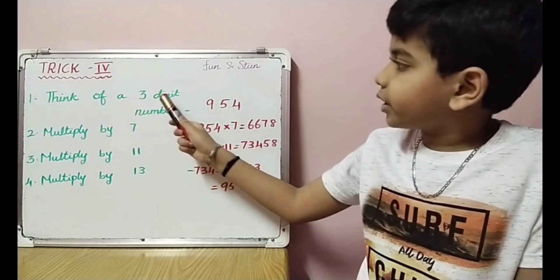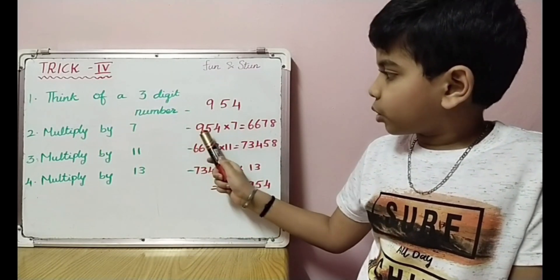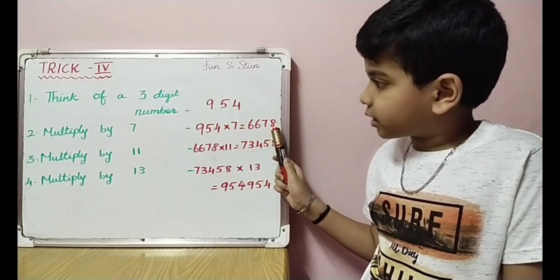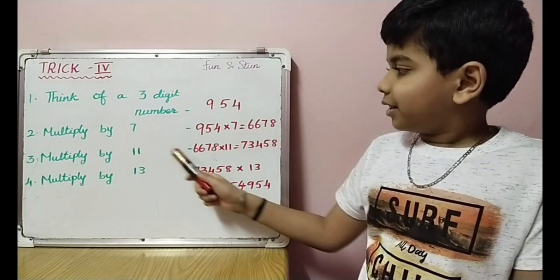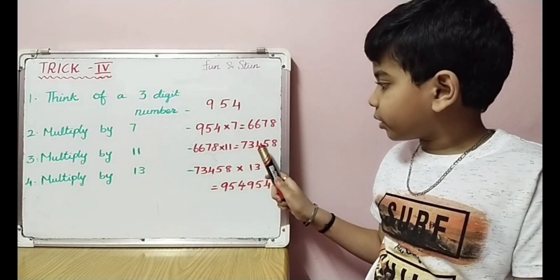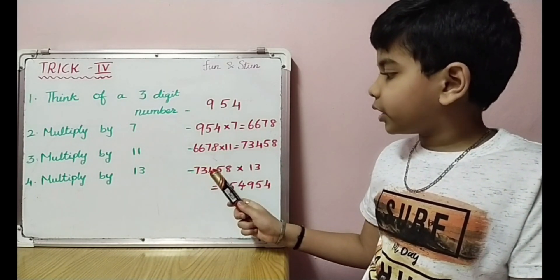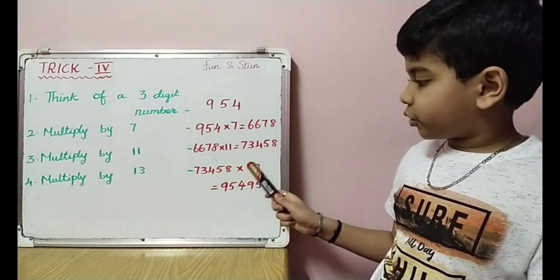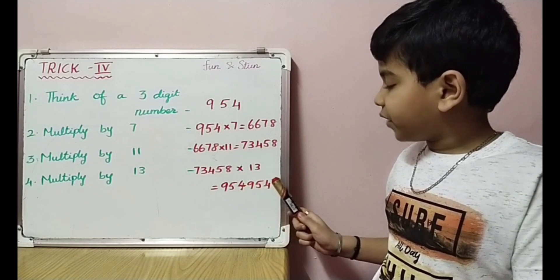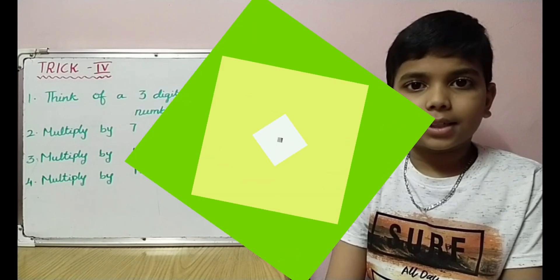Trick 4: Think of a three-digit number, for example 954. Multiply by 7: 954 times 7 is equal to 6678. Multiply by 11: 6678 times 11 is equal to 73458. Multiply by 13: 73458 times 13 is equal to 954954. You will get the original number twice! Try this with many more numbers.